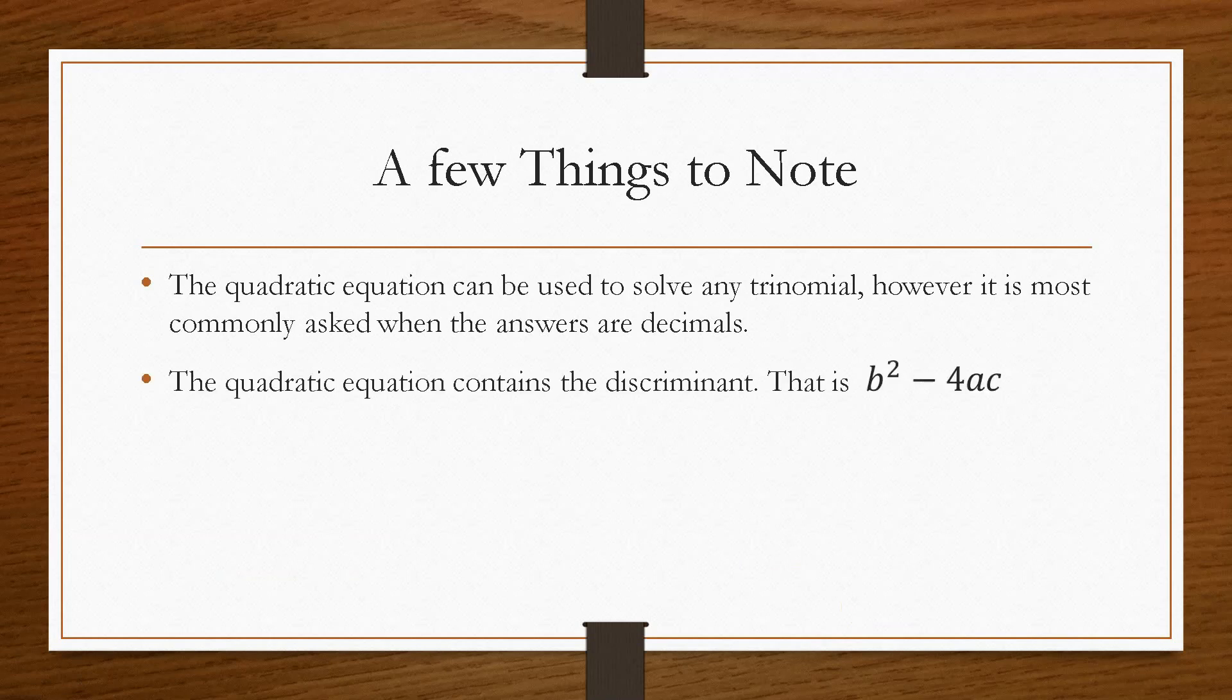So the quadratic equation contains a discriminant. This is the b squared minus 4ac. This is the part that is underneath the square root sign. And this is the other part that is very valuable.